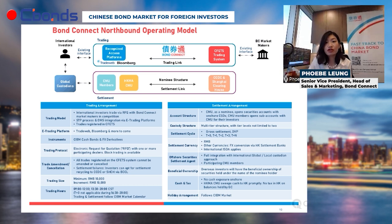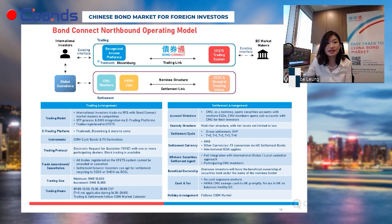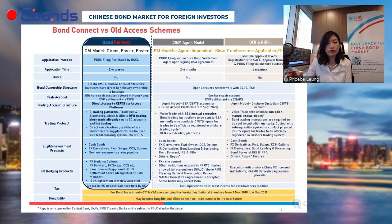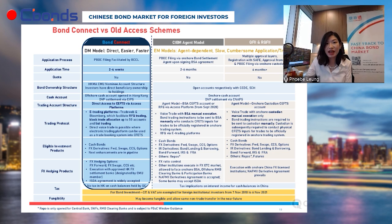Under Bond Connect, investors are not required to open any accounts onshore for their bond holdings. Instead, they hold CIBM bonds through global custodians they already use and the local CMU custodian banks via Hong Kong Central Bank CMU nominee accounts. All cash accounts and operational flows can be maintained offshore without an onshore bond settlement agent. This makes Bond Connect more direct, easier, and a faster route compared to traditional access schemes.